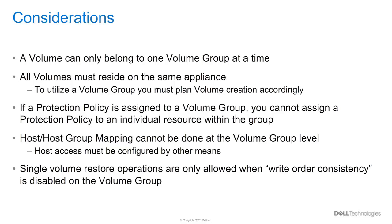There are a few things regarding volume groups an administrator has to consider. First, a volume can only be part of a single volume group. All volumes in the volume group are placed in the same appliance, since PowerStore T can scale up to 4 appliances. A volume that is part of a volume group cannot be assigned another protection policy if the volume group is already assigned one. A host mapping cannot be done at the volume group level — it is assigned individually to the member volumes. Lastly, a single volume cannot be restored if write order consistency is enabled for the volume group; the entire volume group and all member volumes will be restored.